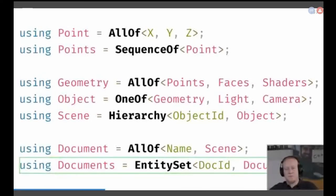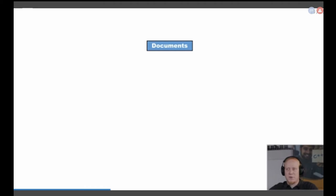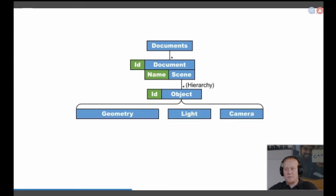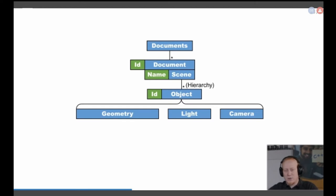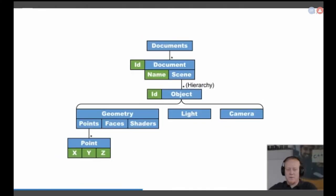To get the point across, let's look at the same schema from a graphical perspective. We start with the document — it contains many documents, each containing an ID and the document itself. The document consists of a name and a scene. The scene is a hierarchy containing multiple objects. Each object has an ID and splits up into either a geometry, a light, or a camera. Geometry contains points, faces, and shaders. Our points is a list of points, and each point is an X, Y, Z.